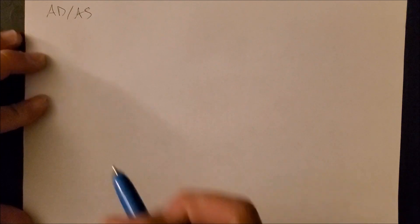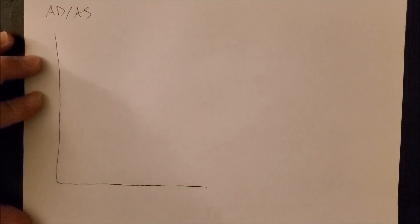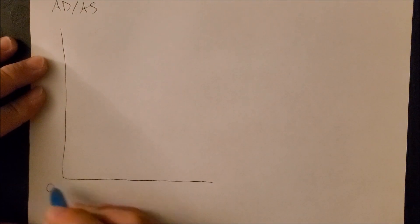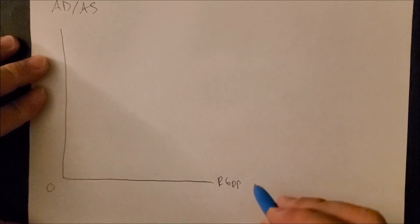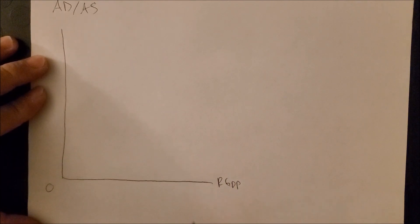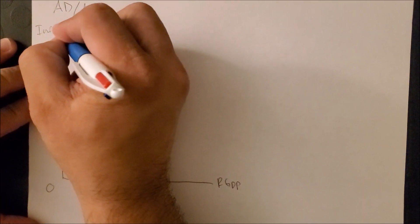To show that, we need to draw our AD/AS graph. And we know on the x-axis we have real GDP, where we look at a base year. On the y-axis we have price level, inflation.